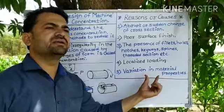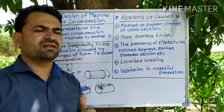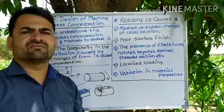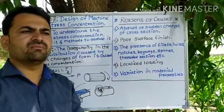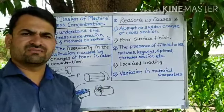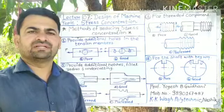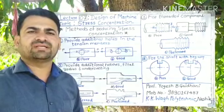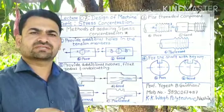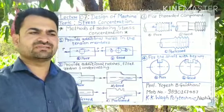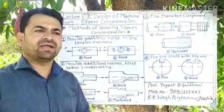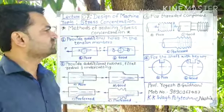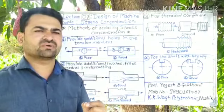The fifth reason is variation in material properties. Whenever material properties change, stress concentration will occur. As we know, material is manufactured with the help of casting. The presence of stress concentration cannot be totally eliminated, but we can reduce it in mechanical elements by applying different methods.